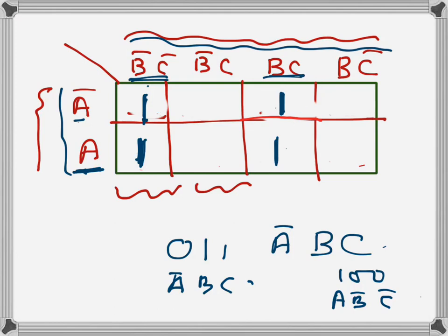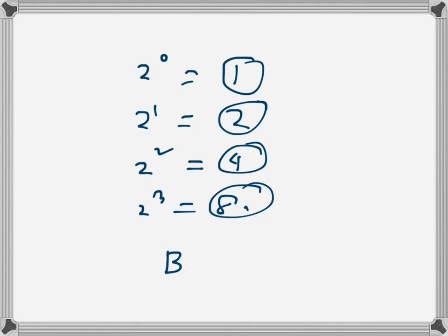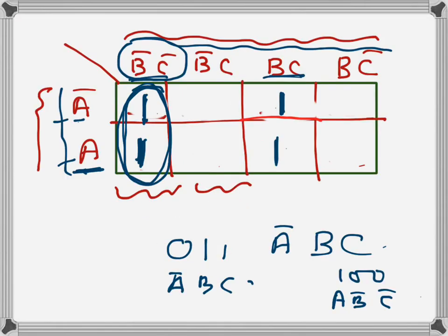The expression for a group is determined by the variables that remain constant across all cells in the group. For this first group of two, A is changing so it is not common. What is not changing is B-bar C-bar, so the expression for this group is B-bar C-bar.